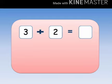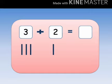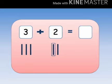For this question, first we will take 3 lines: 1, 2, 3. Now we will take 2 more lines: 1, 2. Let's count all the lines all together: 1, 2, 3, 4, 5. It means there are total 5 lines. So 3 plus 2 equals to 5.